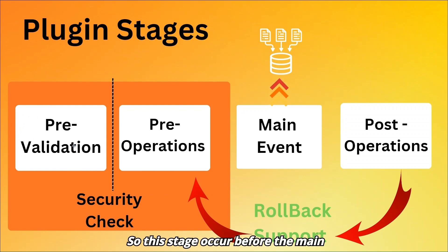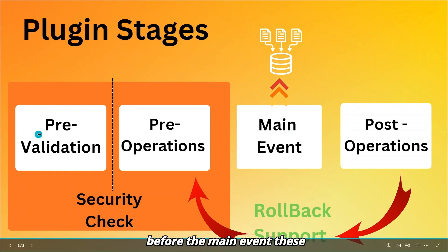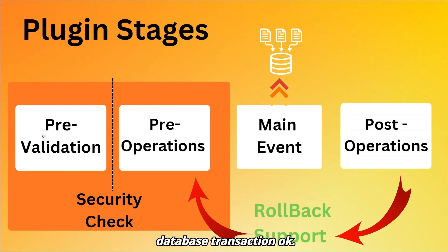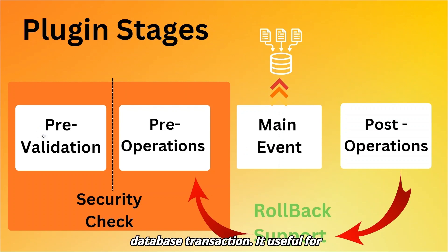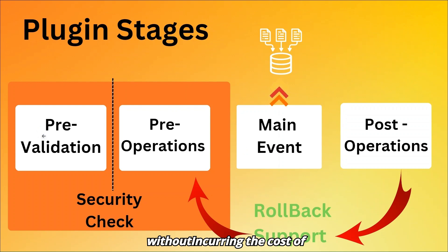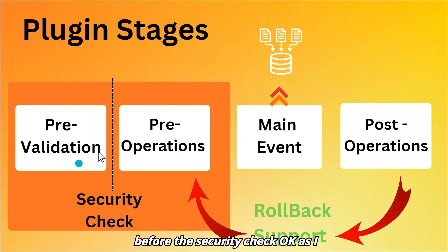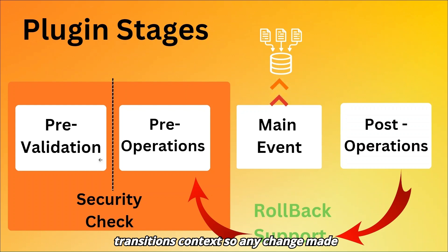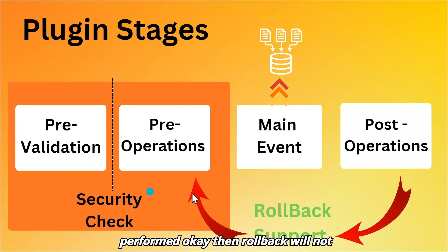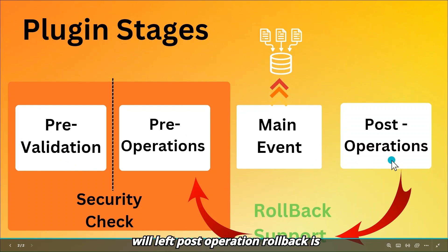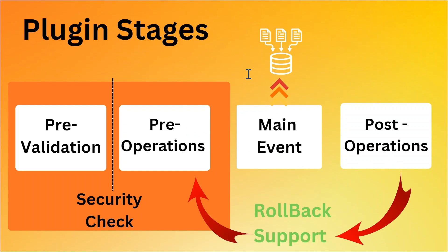What is pre-validation? This stage occurs before the main event and outside the database transaction. It is typically used for initial checks and validations that do not require a database transaction. It is useful for scenarios where you want to abort the operation based on certain conditions without incurring the cost of starting a database transaction. Pre-validation always runs before the security check and does not have access to the transaction context, so any changes made here are not part of the transaction and rollback is not supported.